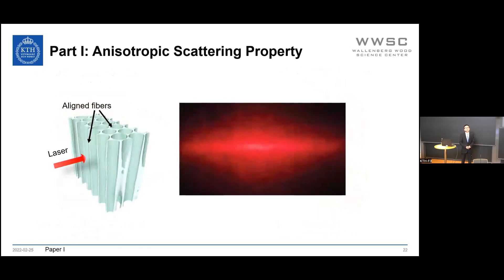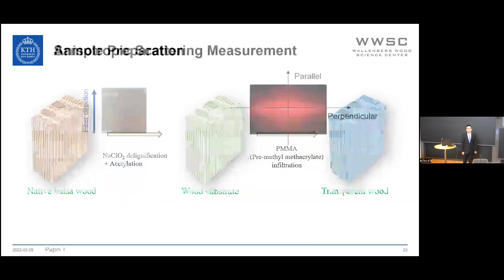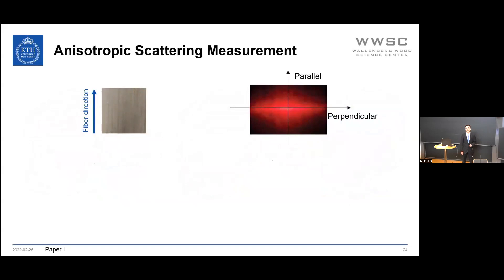Previous reports have shown the anisotropic scattering phenomenon qualitatively, where it is caused by the aligned fibers in the material. In this work, we quantitatively analyze the anisotropic scattering of transparent wood. The sample used is acetylated transparent wood, made from delignified and acetylated wood substrate infiltrated with pre-polymerized methacrylate, or PMMA. When laser light hits the sample surface perpendicularly, the transmitted photons show an anisotropic scattering pattern, which is stronger perpendicular to the fiber direction due to fiber alignment.